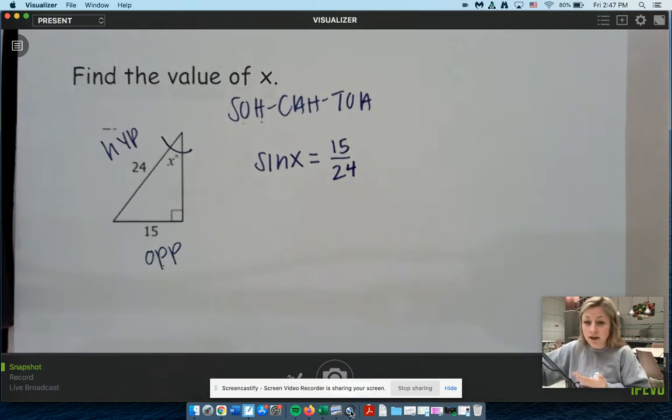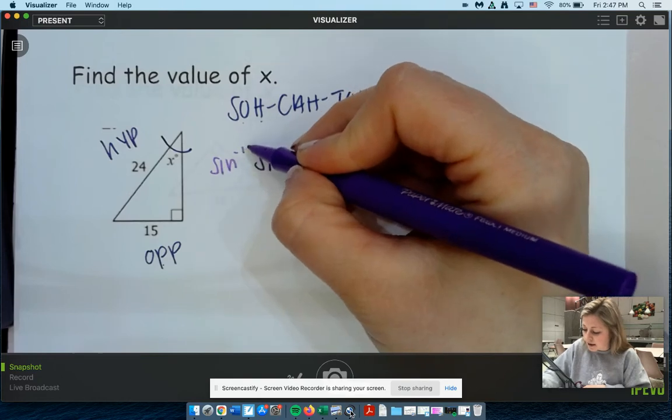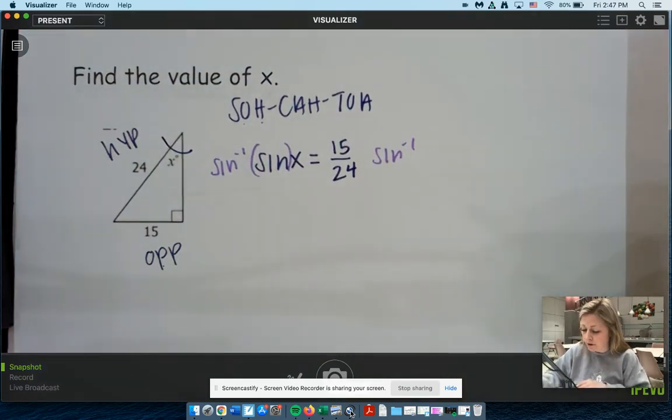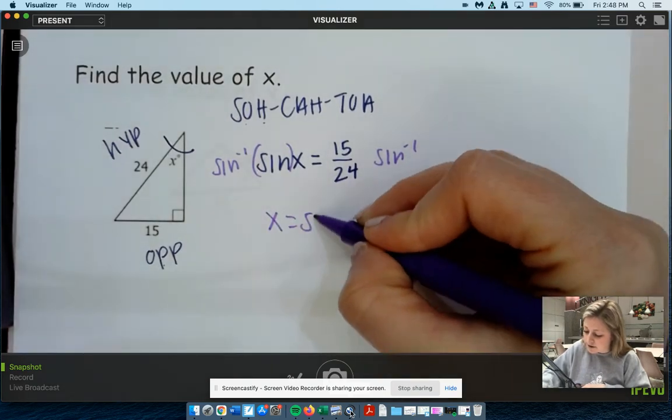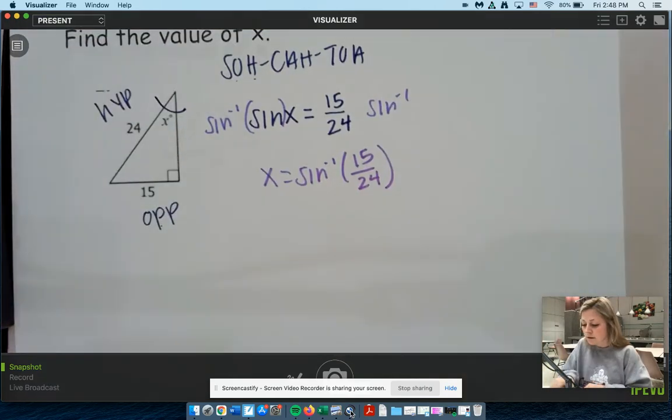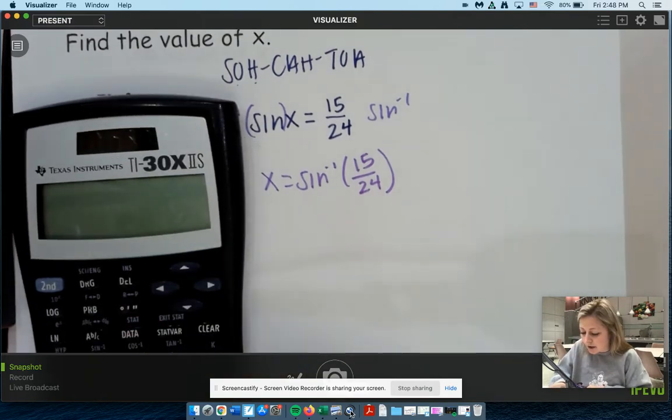is equal to now write your ratio opposite over hypotenuse of 15 over 24. And now again, as always, we're trying to get this x by itself. So in order to do that, we take the sine inverse. And really, you don't have to write that step if you know what you're doing. You can just write x equals sine inverse of 15 over 24. And then from here, there go your little handy dandy calculator.